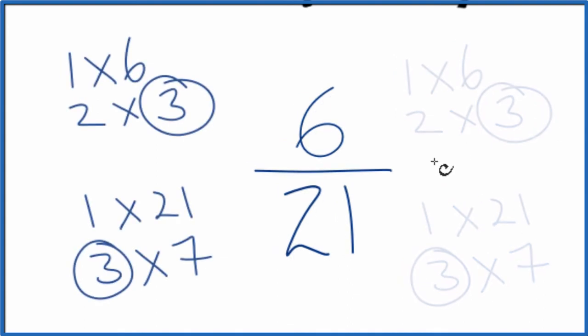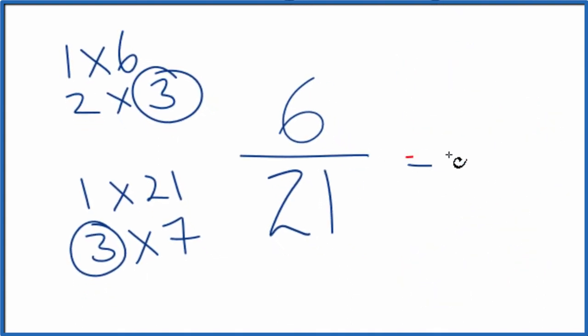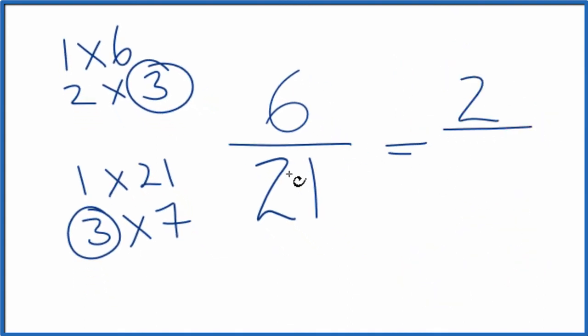Let's move this over here. So we could divide 6 by 3, that would give us 2, and 21 by 3, that gives us 7. And we've simplified the fraction 6 21sts down to 2 7ths. And we can't reduce this any further.